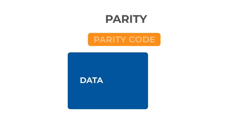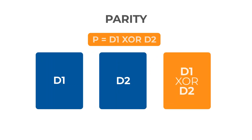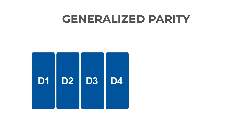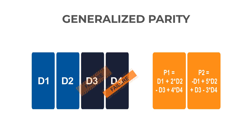A different technique is through the use of a parity code. In the most basic example, let's assume the parity code is the XOR of D1 and D2. By storing the results of the XOR, we can reconstruct either D1 or D2 based on the results of XOR. Here is a further generalization of this concept, where data is divided into four chunks and two different linear equations are used to form two unique parity codes. Using this scheme, if D3 and D4 go down, the data can be reconstructed by solving the linear equations represented in the parity codes.